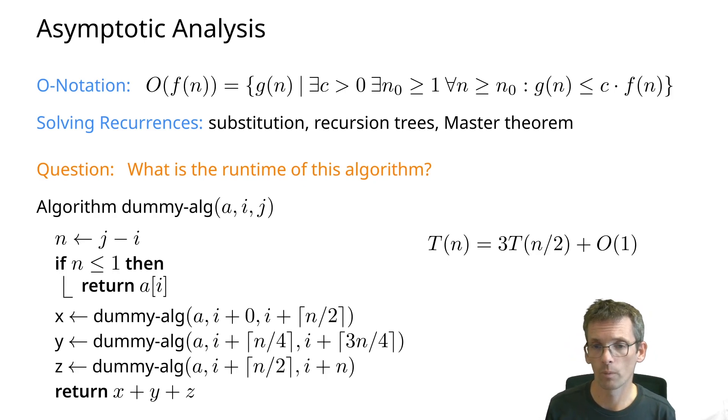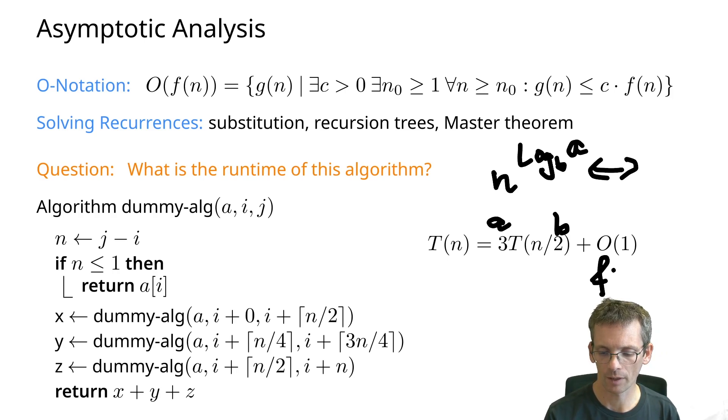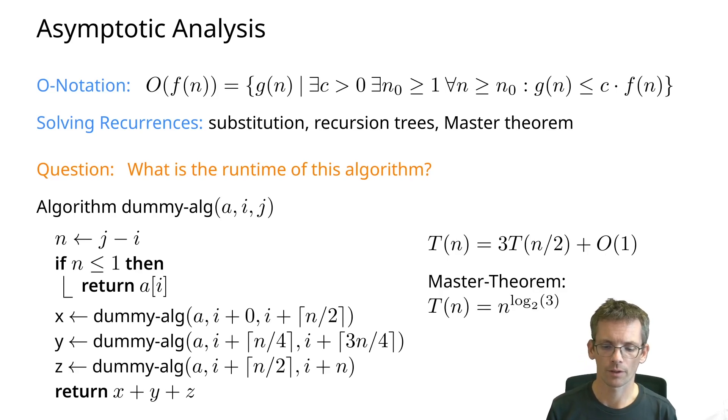The easy way here is using the master theorem. What are we looking at? This is typically called a, so that's 3, b is 2. We are comparing n to the log a to the base of b. We're comparing that to our f(n). f(n) is this term, so we're comparing it to a constant. n to the log a base b, so this is n to the log 3 base 2. That definitely goes faster than a constant, so that will dominate the running time.